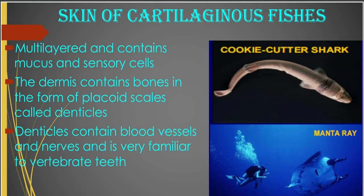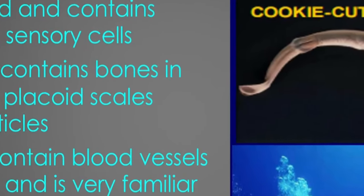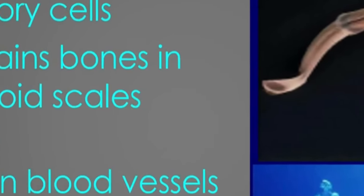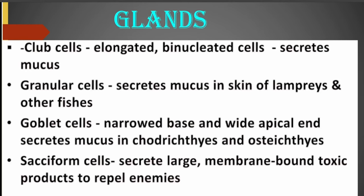Taking a look at the skin of cartilaginous fishes, you can see the cookie cutter shark and the manta ray. Both of them are cartilaginous fishes. The skin is multilayered and contains mucus and sensory cells — that's the epidermis. The dermis contains bones in the form of placoid scales called denticles. The denticles contain blood vessels and nerves and are very similar to vertebrate teeth. There are glands also present. You have club cells, which are elongated, binucleated cells that secrete mucus.